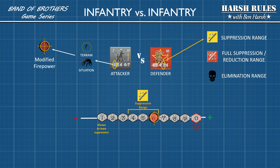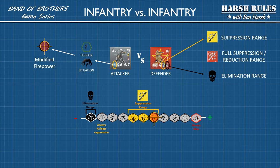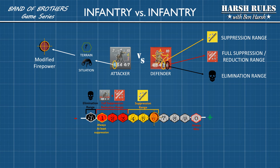Next, identify the suppression range. On the casualty rating, this is the number before the slash — in this case, a 3. So counting back, a roll of 4, 5, or 6 is suppression. Next, identify the elimination range — this is the number after the slash, which in this case is a 6. Counting back 6 from the modified firepower takes us off the range to a negative 1. The numbers between suppression and elimination make up your full suppression and reduction range — in this case, 1, 2, and 3.